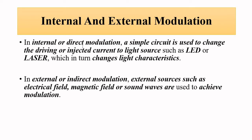Internal or direct modulation is the process of changing the driving current to the circuit which produces light — that is, the photoelectric conversion of electrical energy into light energy. If we increase the current, we increase the light intensity, which increases the amplitude or intensity of the light signal.